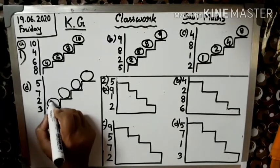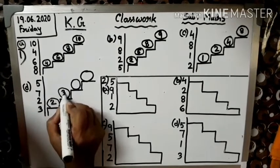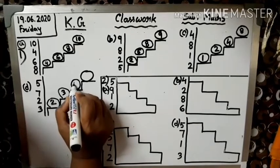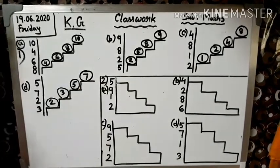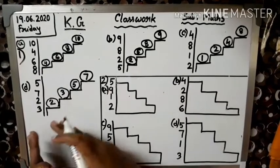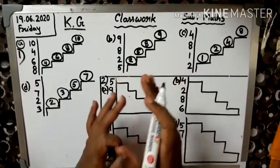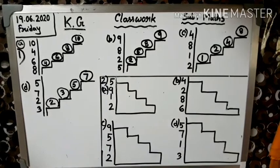One nahi hai, two hai. Three bhi hai. Four nahi hai, five likh lo, five hai. Six, seven. Toh abhi hum log kya bana rahe hai? Ascending order. Thik hai?